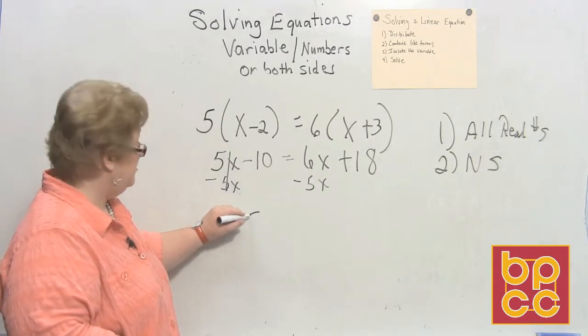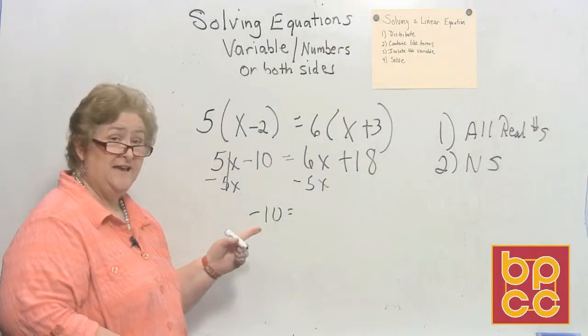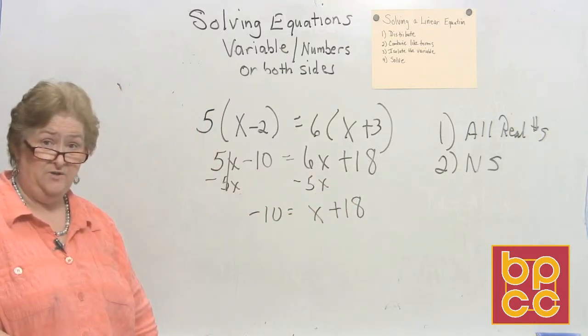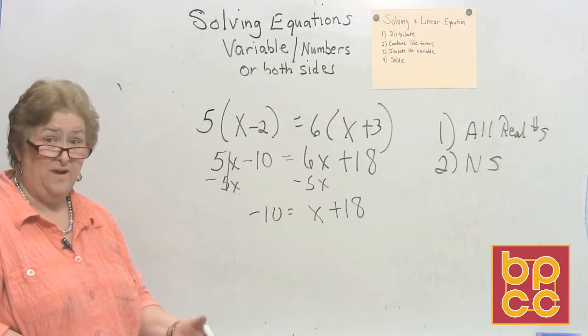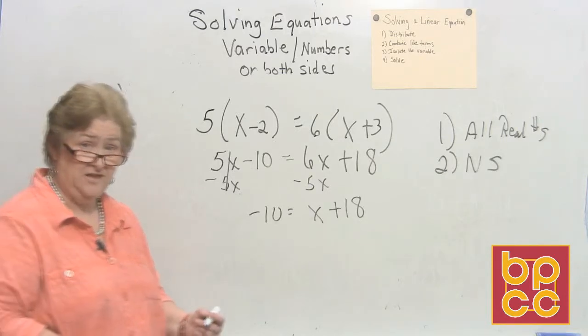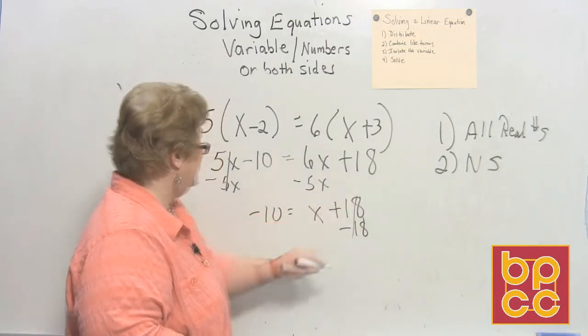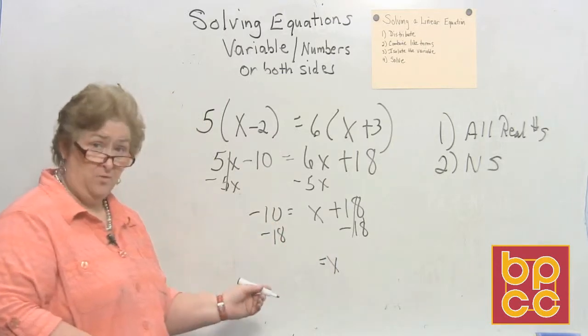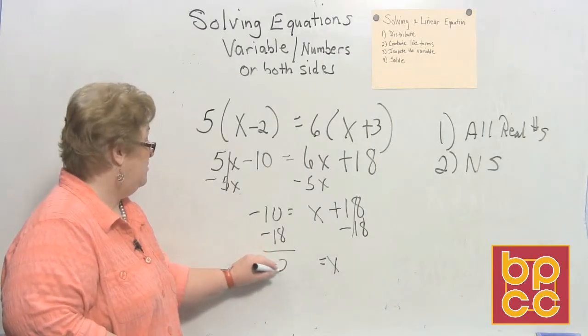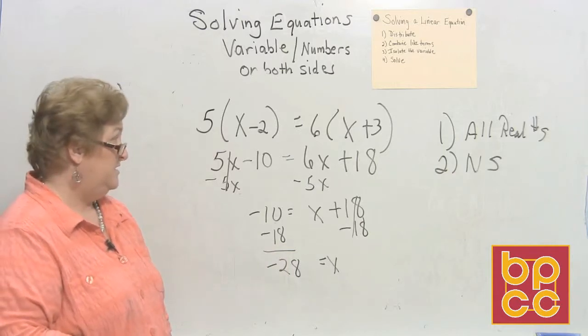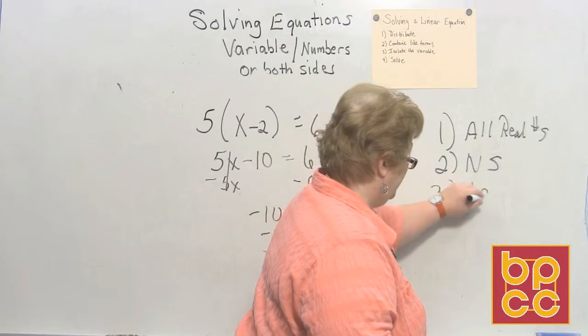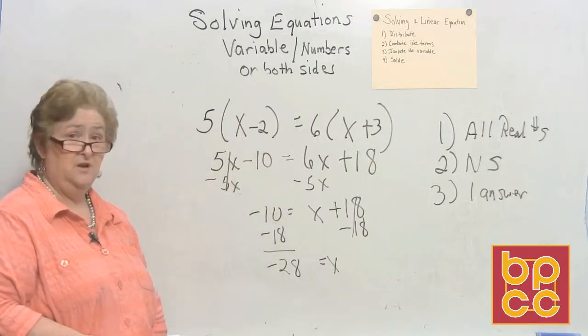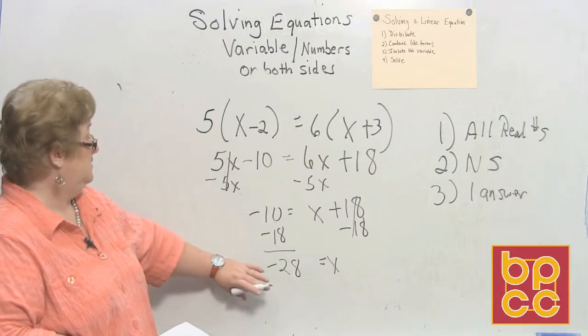I now have, I'm going to rewrite the problem for you. I have a negative 10 equal 6x and a negative 5x is just x plus 18. Now we're back to one of our little baby equations. It's time to move the number away from the variable. And so I'm going to tell that 18 to move to the other side. And I'll do that by adding the opposite, negative 18. Over here, negative 18. I now have x is equal to negative, and more negative makes a whole bunch of negative. x is equal to a negative 28.